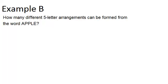In example B, it says how many different five letter arrangements can be formed from the word apple. So again, this is a word that has five letters in it and two of the letters are repeated, the P and the P. So if there were no repeated letters, our answer would just be 5P5.